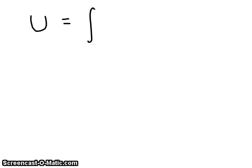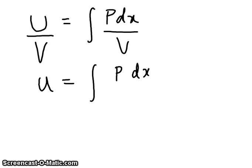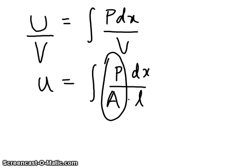If capital U can be written as the integral of P dx, then dividing the equation by V will give you strain energy density. So u is equal to the integral of P dx, except now I'm going to split V as area times length, that is A times L. Now, P by A is obviously stress.